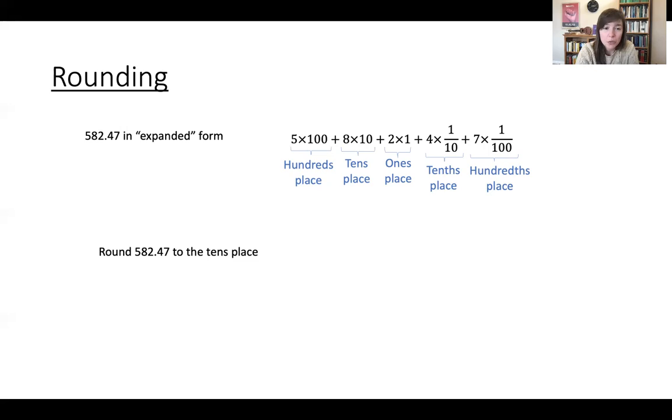Okay, so 582.47 rounding to the tens place, what we do is we look at the tens place. So 8 is in the tens place. So we have 582.47 and you look to the number, the digit just to the right of the place that you are asked to round to. And if that digit is 0, 1, 2, 3, 4, then you leave the tens place alone. You make everything else to the right 0. And that's your number. So rounding to the tens place is 580.